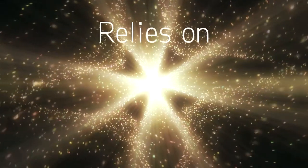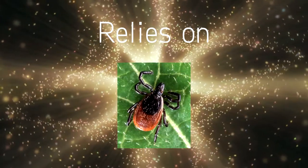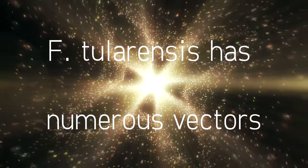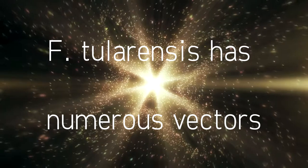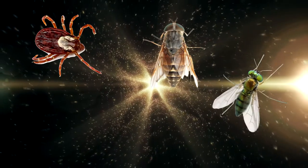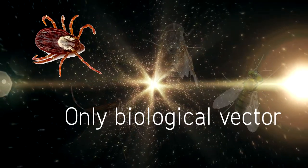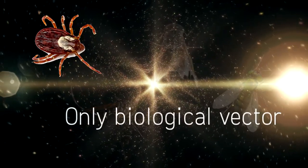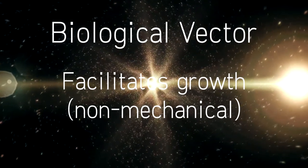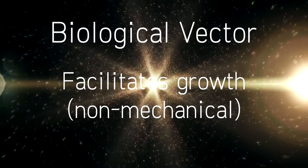In order to spread throughout a host population, the organism most likely relies on ectoparasites for dissemination. Francisella tularensis also has multiple vectors, both mechanical and biological, that transmit the organism to humans and other mammals. The most important vectors are ticks, deer flies, horse flies, and mosquitoes, with only ticks suggested to be biological vectors. A biological vector is one that facilitates growth of the bacterium, rather than just being a means of dissemination.